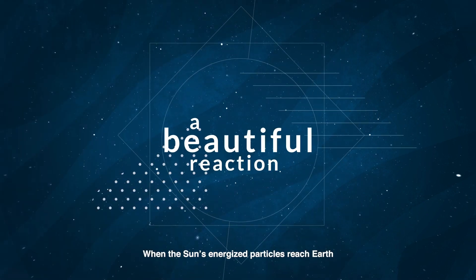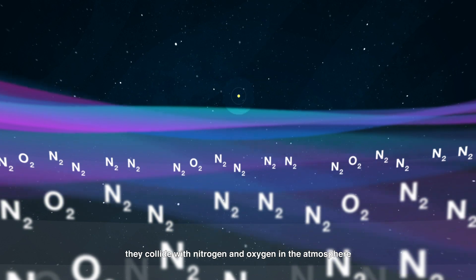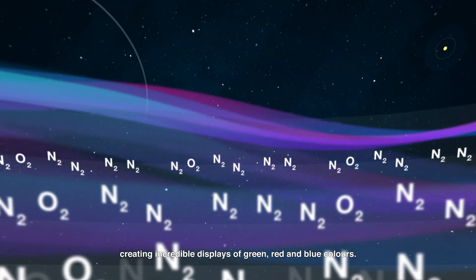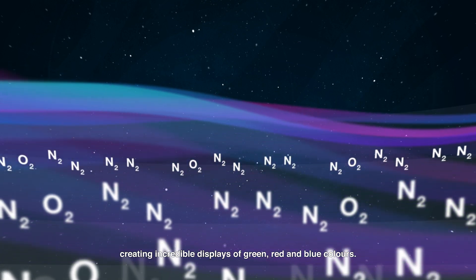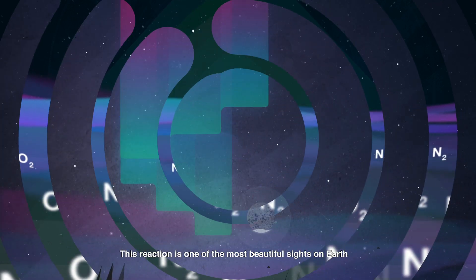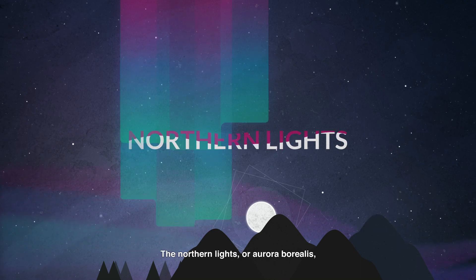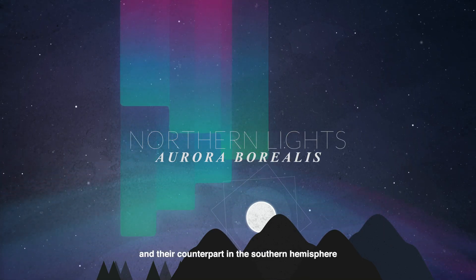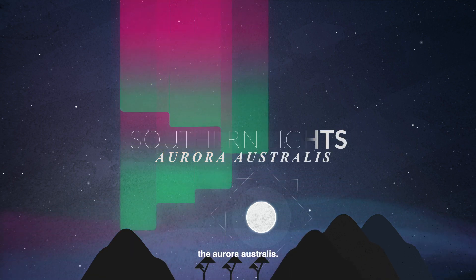When the Sun's energized particles reach Earth, they collide with nitrogen and oxygen in the atmosphere, creating incredible displays of green, red, and blue colors. This reaction is one of the most beautiful sights on Earth, the Northern Lights, or Aurora Borealis, and their counterpart in the Southern Hemisphere, the Aurora Australis.